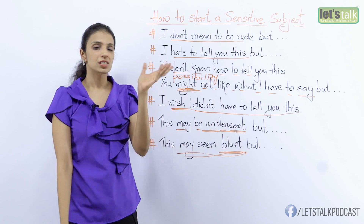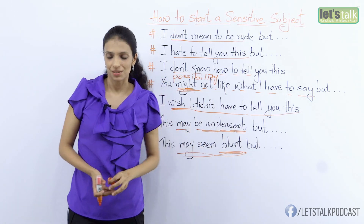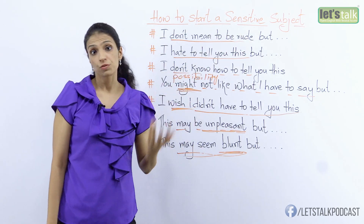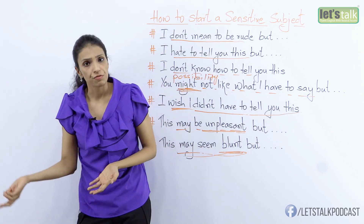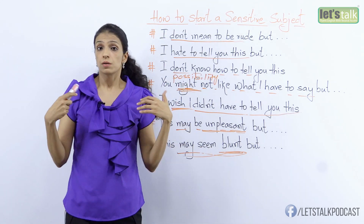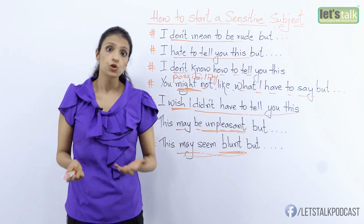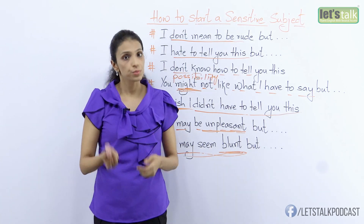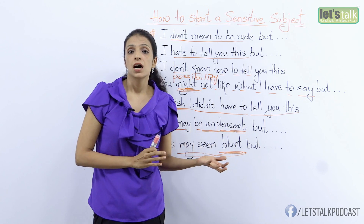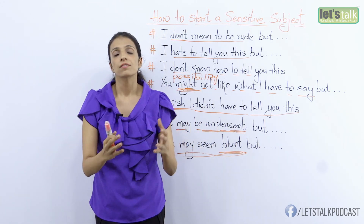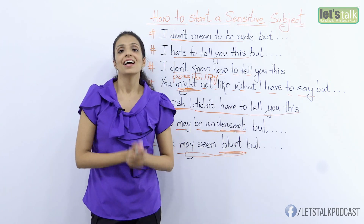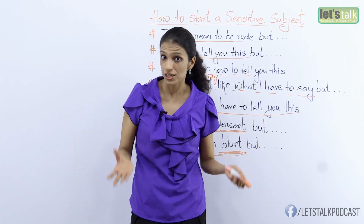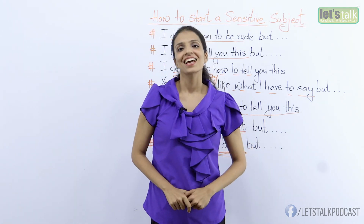So these are certain phrases you could use when you want to talk about something sensitive — it could be something not very positive, or something that could offend the other person. Remember, whatever information or news you are sharing, make sure you do it in private and don't say certain things publicly where you could cause embarrassment. Anyway, you have something not so pleasant to tell them, so do it on a one-to-one basis. I hope you find these phrases useful — go ahead and use them, and I'll be back soon with a new lesson. Take care and bye.